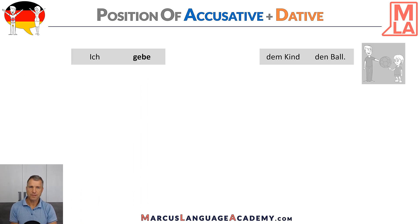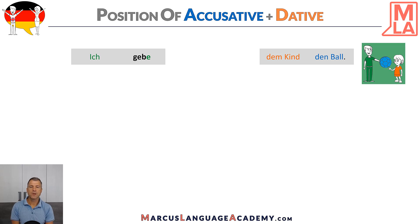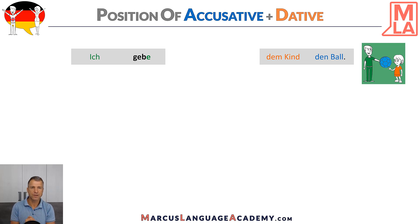Let's look at an example sentence: 'Ich gebe dem Kind den Ball' — I give the kid the ball. Let's add some colors to see what's going on here. So we have 'ich' — it's nominative, it's green, it's the subject of the sentence. 'Ich gebe' — the verb ending depends on the subject, so it's also green. And then we have 'dem Kind' and 'den Ball'.